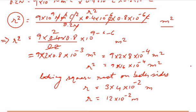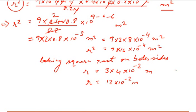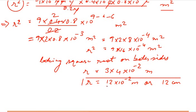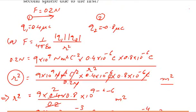The distance between the two spheres is 12 × 10⁻² meter, or equivalently 12 centimeters. This is the answer for part a.